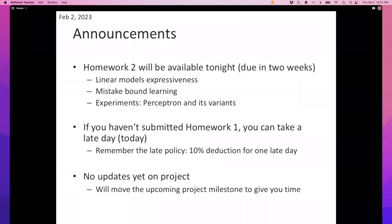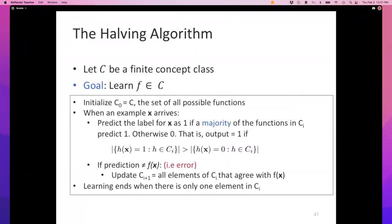We're going to go back into our discussion on mistake-bound algorithms. In the last lecture we were talking about the mistake-bound model of learning — it's a framework, a protocol with which your learner interacts with data. Learning proceeds in rounds: nature presents an example, the learner uses its current hypothesis to make a prediction, nature reveals the true label, and if the label doesn't match the prediction the learner gets to correct itself.